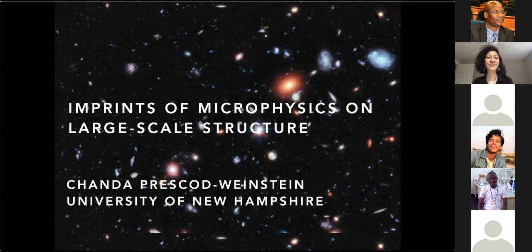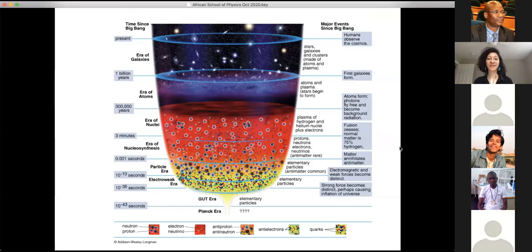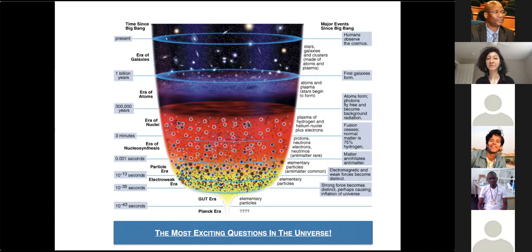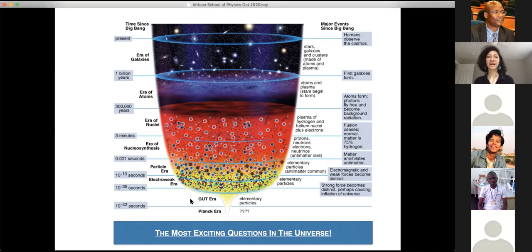The title of this talk is 'Imprints of Microphysics on Large-Scale Structure.' The area of work I do is particle cosmology. The slide you're looking at is a timeline of the universe — from the bottom, where our part of spacetime started, maybe with a big bang, maybe not. The timeline goes upward. I spend a lot of my time thinking about what happened in the first three minutes, in that reddish region, and what the imprint of those first three minutes is on things we can see now, at the present.